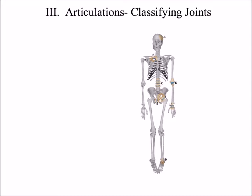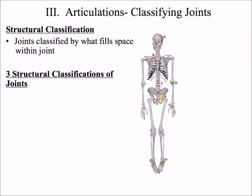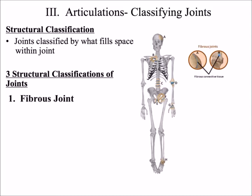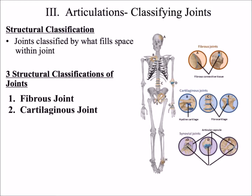The second method for classifying a joint is by structural classification. In structural classification, we look at what fills the space between the two bones. There are three structural classifications of joints: the fibrous joint, the cartilaginous joint, and the synovial joint.